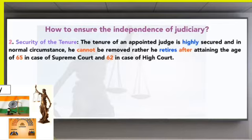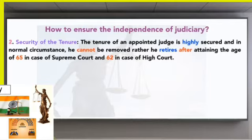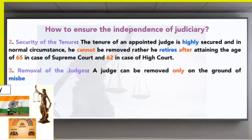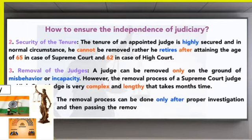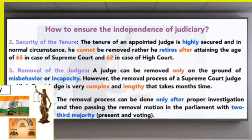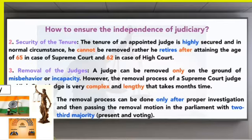The tenure of an appointed judge is highly secured and in normal circumstances he cannot be removed. A Supreme Court judge retires at the age of 65 and a High Court judge at 62. Once a judge has reached 65 or 62, they no longer need to attend court as a judge. Regarding removal of a judge: a judge can be removed only on grounds of misbehaviour or incapacity.